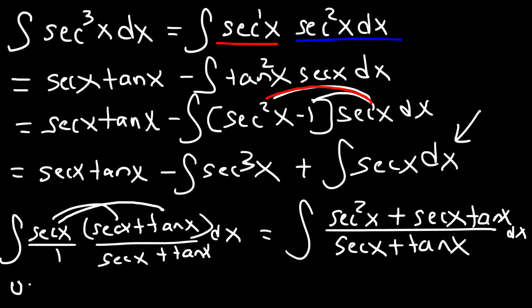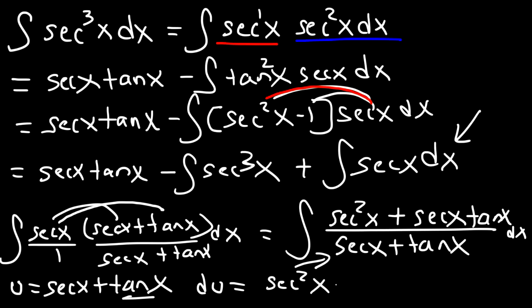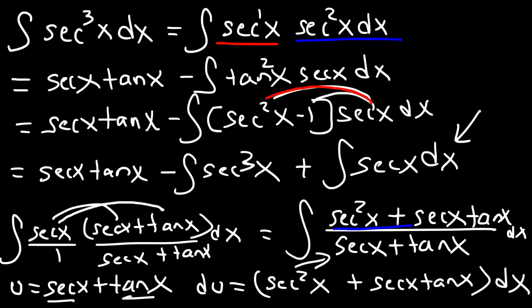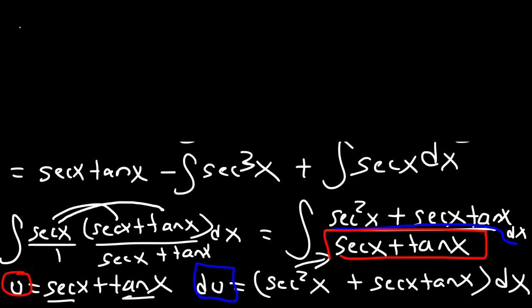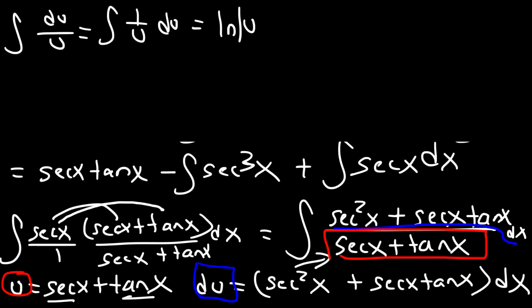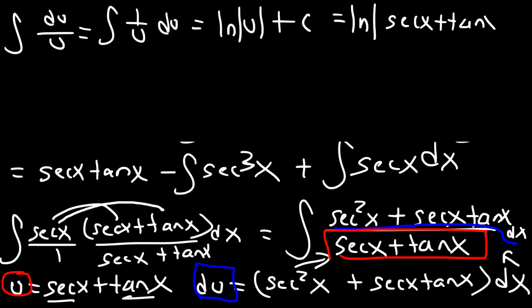We're going to make u equal to the denominator, secant x plus tangent x. So du is going to be — the derivative of tangent is secant squared, and the derivative of secant is secant x tangent x — times dx. Notice that the numerator is the same as du, so we can replace the numerator with du and the denominator with u. We now have the integral of du over u, and the integral of 1 over u is the natural log of u plus c. So we get natural log of secant x plus tangent x plus c.